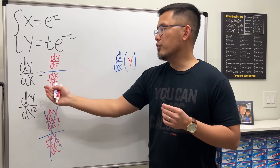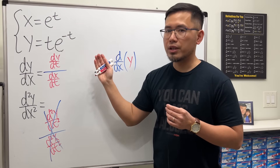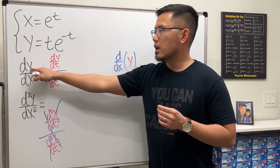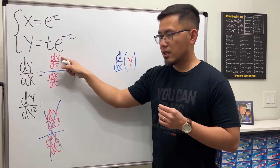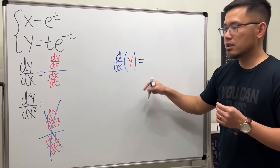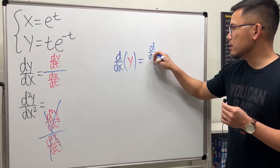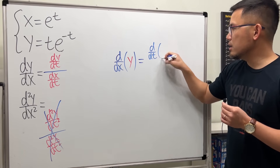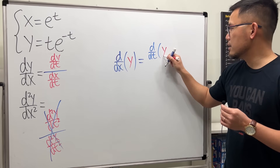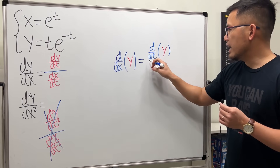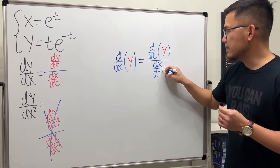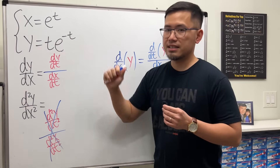If we have parametric equations, then y is here. As a result, we get d/dt on the top, and then here is where the y belongs. After that, we divide it by dx/dt. That is the same as what we had before.